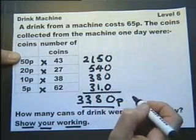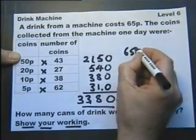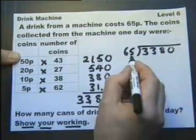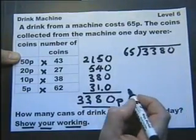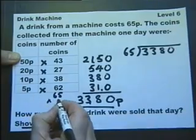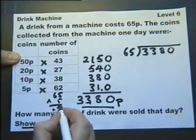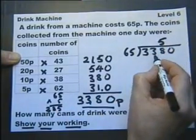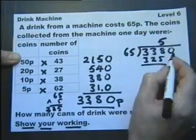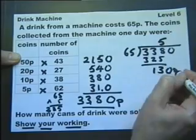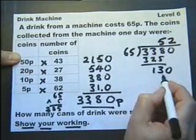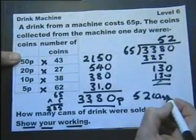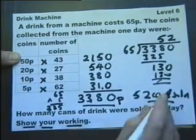And each can costs 65 pence. So we actually need to find out how many 65s there are in 3380. Well I'm not very good at my 65 times table. So let's just work out to one side what 5 65s are. 5 5s of 25 carry the 2. 5 6 is a 30, that's 32. Therefore in fact I can do 5. And get 325. Subtract. Bring down the next nought. 65s into that goes 2. Therefore it's 52 cans. 52 cans sold. There we go.